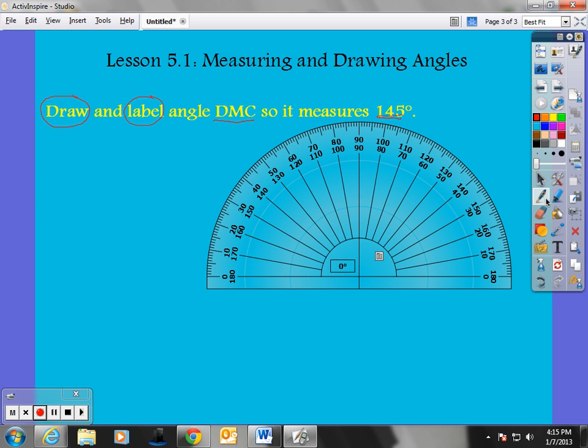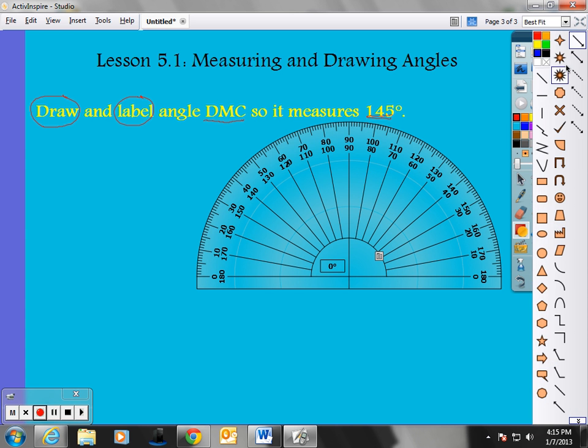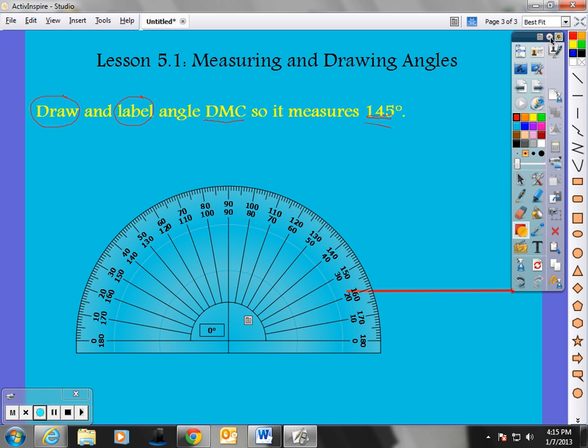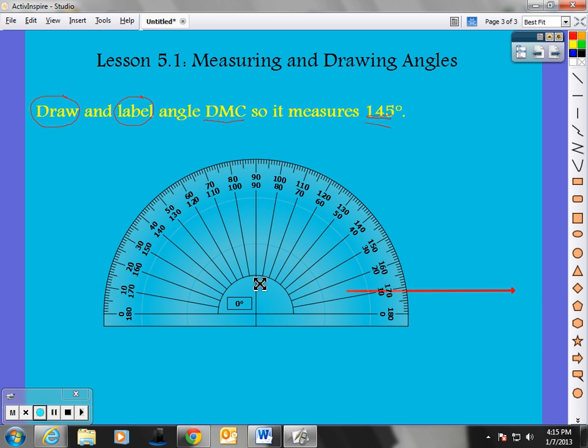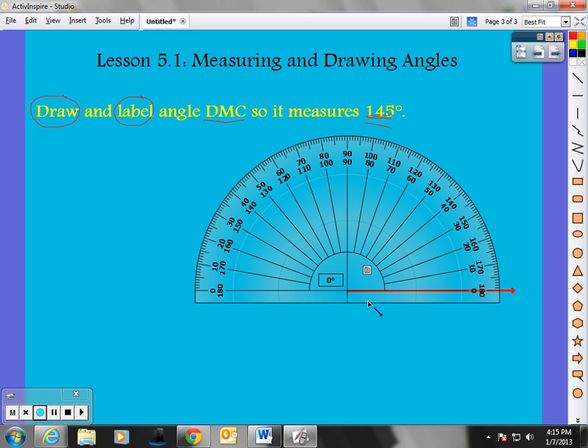So, first thing I do is I'm going to make a straight line. Make a ray with my protractor. Now, again, I can kind of cheat. But, I'll try to show you here. So, here is my ray. I would draw one using the straight edge there. The bottom of my protractor. Make it straight. Now, it has to be 145 degrees. So, I'm going to take my protractor. Line it up. This will be my vertex here. At the end of this ray.